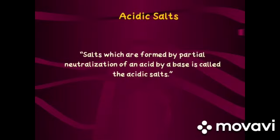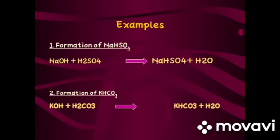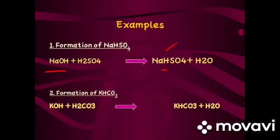The second group is acidic salts. Acidic salts are salts formed by the partial neutralization of an acid by a base. Partial neutralization means the acid does not give all of its hydrogen to water formation, so the salt formed contains replaceable hydrogen ions. For example, NaOH reacts with sulfuric acid to form sodium hydrogen sulfate (sodium bisulfate). Hydrogen is present in this salt, making it an acidic salt. In normal salts like KCl and NaCl no H group is present, but in acidic salts the H group is present.